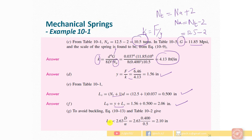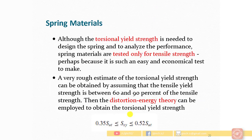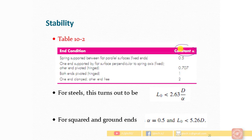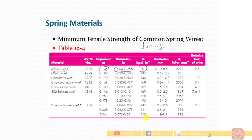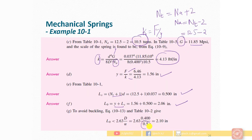For buckling, the condition is: free length must be less than 2.63 × D_mean / α, where α comes from table 10/2. For square and closed ends (spring supported between flat and parallel plates), α = 0.5. Substituting gives the critical free length = 2.10 inches. Since our calculated free length of 2.06 inches is less than 2.10 inches, there are no chances of buckling.